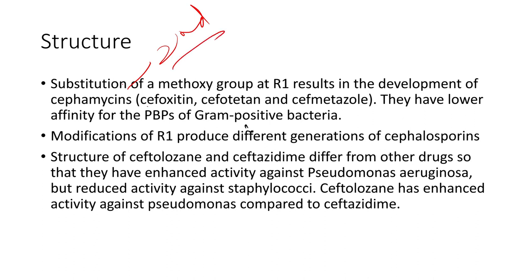The cephamycins — second-generation cephalosporins — include cefoxitin, cefotetan, and cefmetazole. These are very important because, unlike most other cephalosporins, they have very good anaerobic activity. They have reasonable gram-positive and good gram-negative coverage, and most importantly good anaerobic coverage including Bacteroides fragilis. Their gram-positive activity is somewhat less because binding to penicillin-binding proteins of gram-positive organisms is poor.